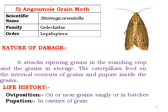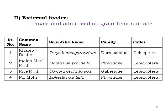The Angoumois grain moth, Sitotroga cerealella, is from the Order Lepidoptera. Small adults can be observed even in household settings. In our godowns, it attacks ripening grain in standing crops and stored grains. The larvae feed on the internal content of grains, and pupation occurs inside the grain. Egg-laying involves flowy deposition on or near the grain, singly or in batches, and pupation occurs in cavities of the grain.